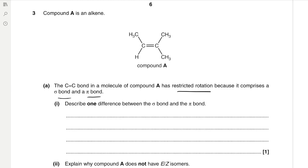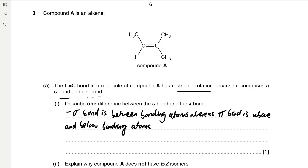Question 3: Compound A is an alkene. The carbon-carbon double bond has restricted rotation because it comprises a sigma bond and a pi bond. One difference between them: the sigma bond is an end-on overlap of orbitals between bonding atoms, whereas the pi bond is a sideways overlap of orbitals above and below the bonding atoms.